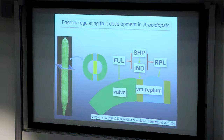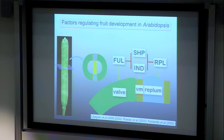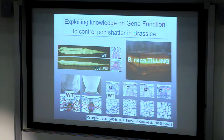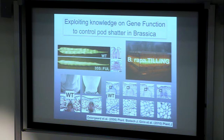We thought we could use this scheme to address pod shatter in brassicas. The first attempt was to overexpress the fruitful gene with the idea that we would everywhere repress valve margin identity. When we did this in brassica, what we found was that here we have a wild-type brassica fruit that opens along the valve margins, and here we have a fruit that overexpresses the fruitful gene. These fruits are completely indehiscent compared to wild type. Although this is an important lesson that we can translate fundamental knowledge from the model system into crops, it's not a very desirable outcome for the farmer because he would actually have to manually break open each pod in the field to get the seeds out.